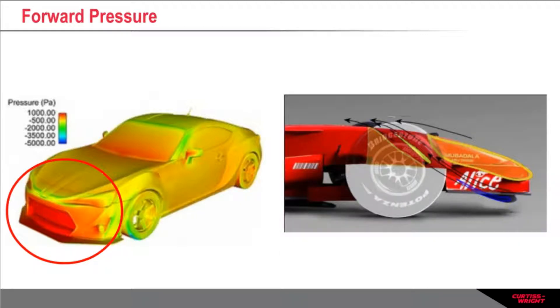On an aircraft, the forward pressure is channelled into a tube known as a pitot tube, which is connected to a pressure sensor inside the air data computer.